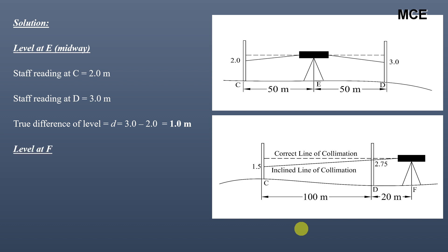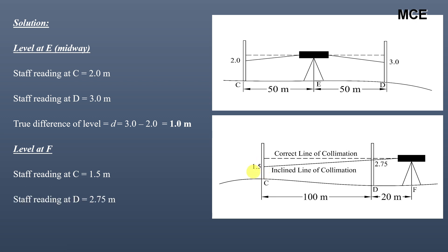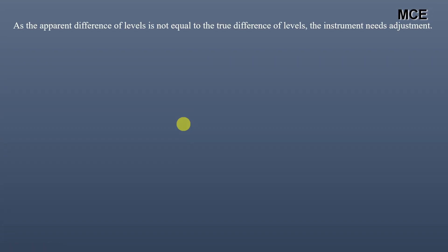For the second case, when the level is at point F such that CF is 120m and DF is 20m, the staff reading at C is 1.5m and staff reading at D is 2.75m. The apparent difference of level between C and D is 2.75 minus 1.5, which is 1.25m. Since the apparent difference is not equal to the true difference of 1m, the instrument needs adjustment — the line of collimation is not horizontal.